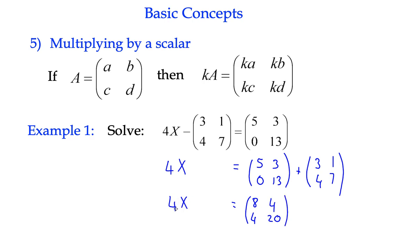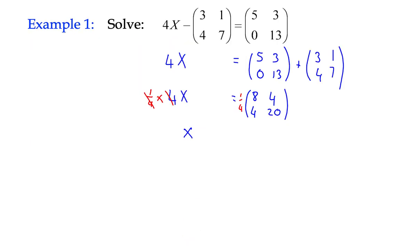Now if I want to get this matrix X on its own, at the moment it's being multiplied by 4. So we would normally divide both sides by 4 for an equation. When it comes to matrices, it's easier to think always of multiplying both sides of an equation. So in this case, we would actually multiply both sides by a quarter. It's easier to think of multiplying when it comes to matrices. So the quarter and the 4 obviously are inverse operations, and that leaves us with X here.